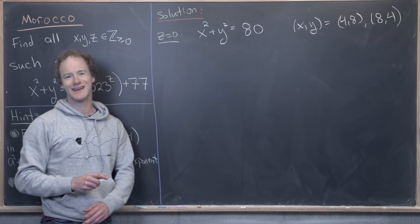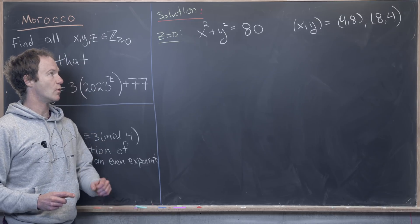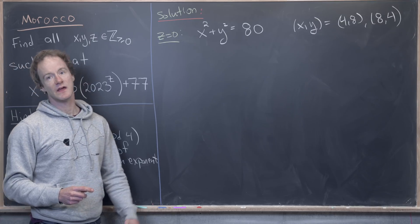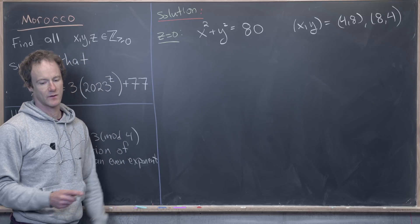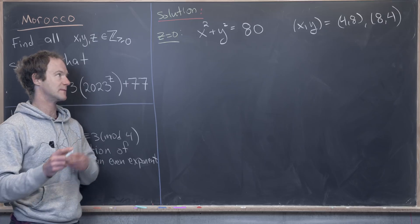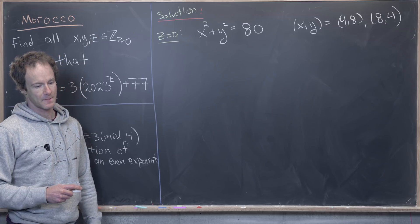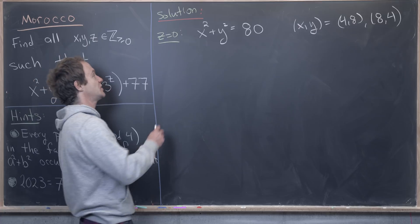But then you can check that nothing else works. So if one of them is equal to 7, then what you have left over is not a perfect square. If one of them is equal to 6, what you have left over is not a perfect square, and then so on and so forth.